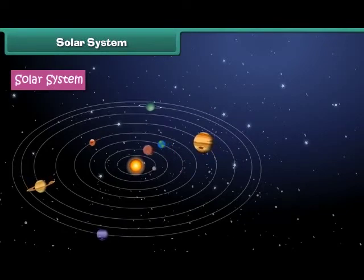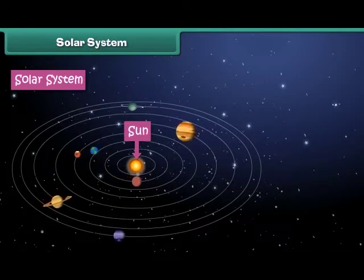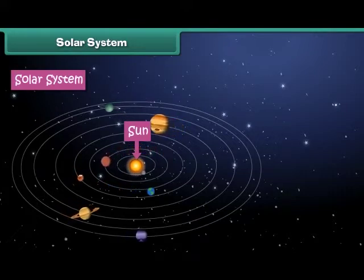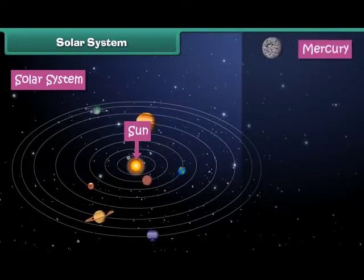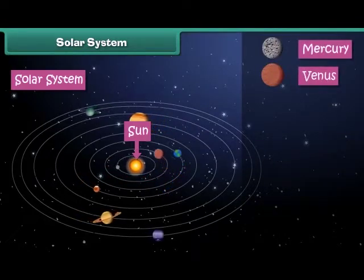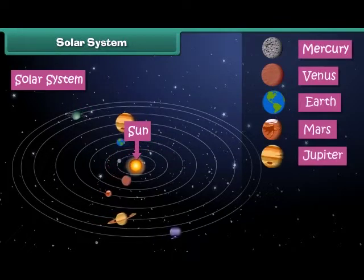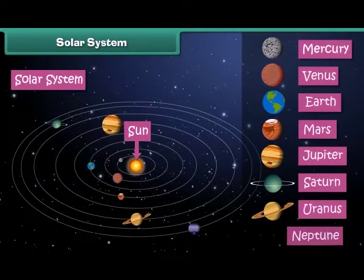We live in the solar system. The solar system is the family of the Sun and its eight planets. In the solar system the Sun is placed at the center and the eight planets revolve around it. The eight planets are Mercury, Venus, Earth, Mars, Jupiter, Saturn, Uranus, and Neptune.